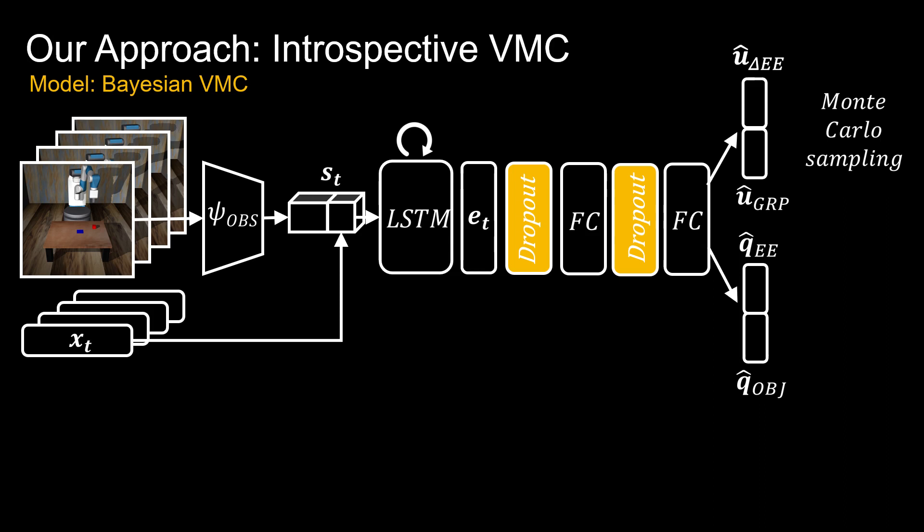To estimate the model epistemic uncertainty, in our Bayesian VMC, we add concrete dropout layers. At test time, at time step t, we draw Monte Carlo samples and use the mean as the next action to execute. Monte Carlo sampling gives us an uncertainty estimate of the current time step t associated with the current state, but does not tell us which action leads to a small uncertainty.